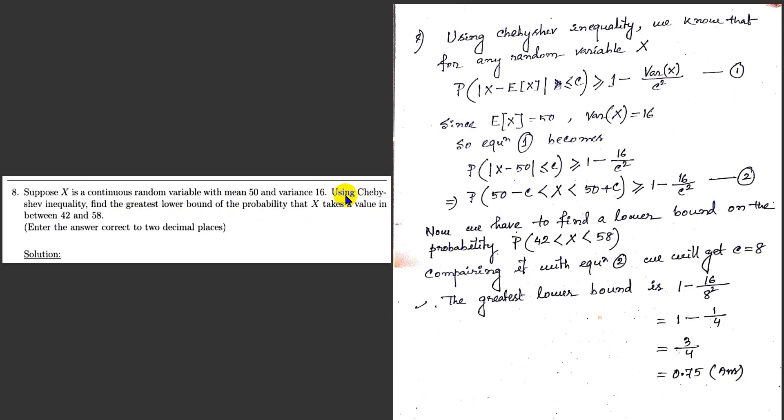To solve the question, from Chebyshev inequality, we know that probability of mod of X minus expected value of X less than or equal to c is greater than or equal to 1 minus variance of X by c squared.